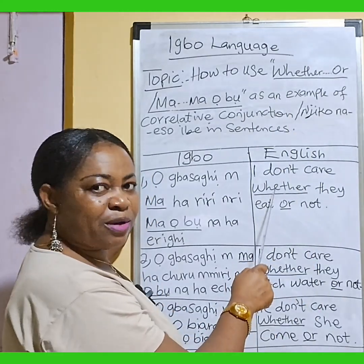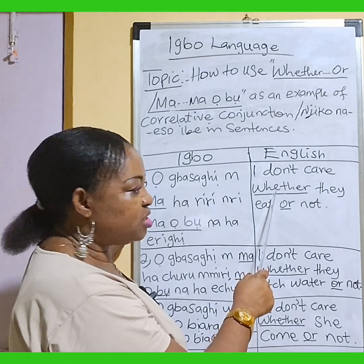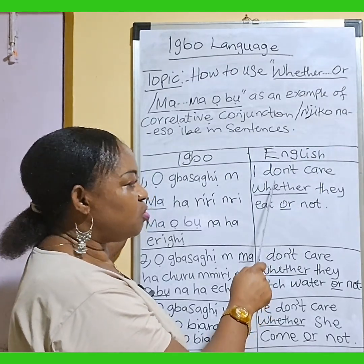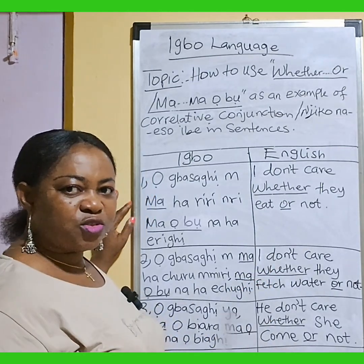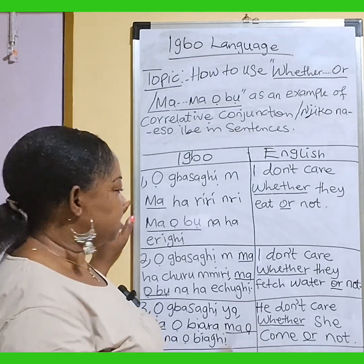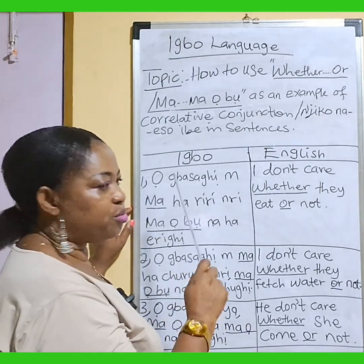'Whether or' is our conjunction in English. 'Whether or' is our conjunction in English. In Ibo, it means 'ma, ma or.'